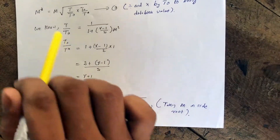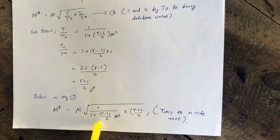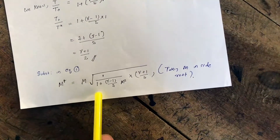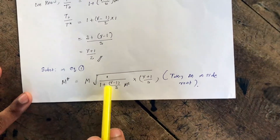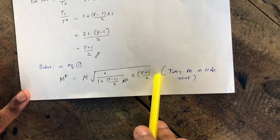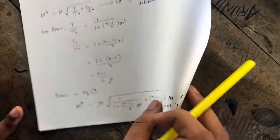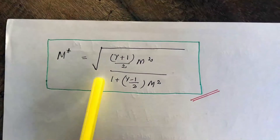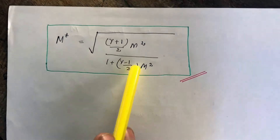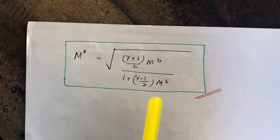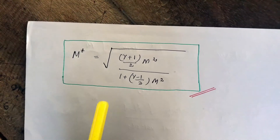Substituting both values into the equation, M* = M × √[(1 / (1 + (γ−1)/2 × M²)) × ((γ+1)/2)]. Rearranging, we get the final result: M* = √[(γ+1)/2 × M² / (1 + (γ−1)/2 × M²)]. This is our derivation. Thank you.